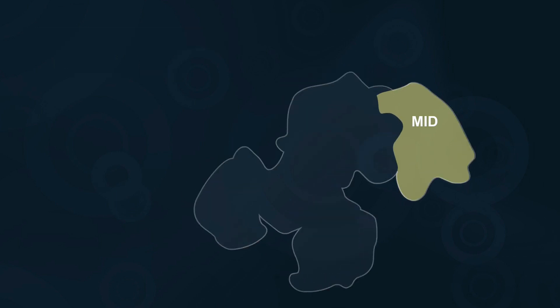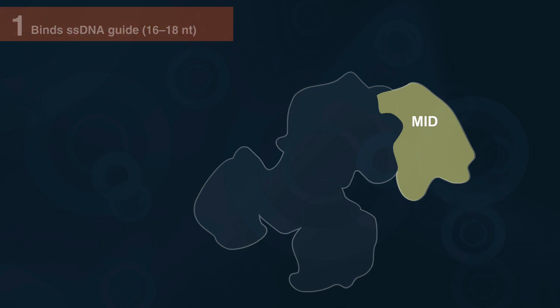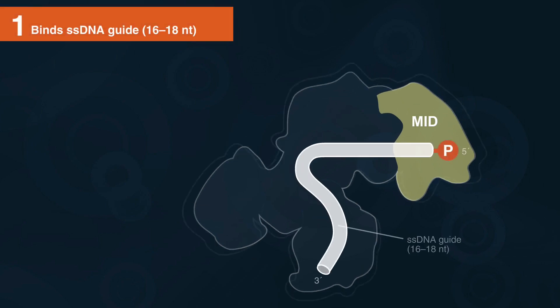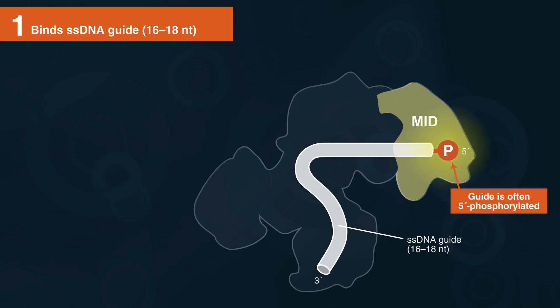The MID domain of prokaryotic argonaut binds a short, single-stranded oligonucleotide guide, which is typically 16 to 18 nucleotides in length. The guide is often 5' phosphorylated, though some argonauts can utilize guides with other 5' chemical modifications.